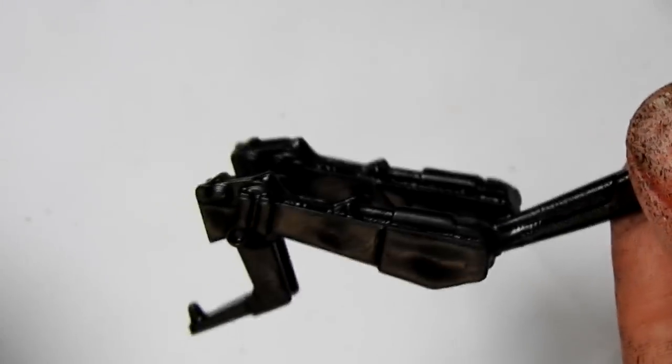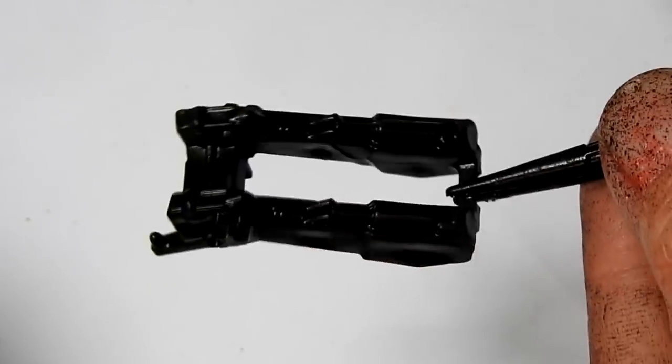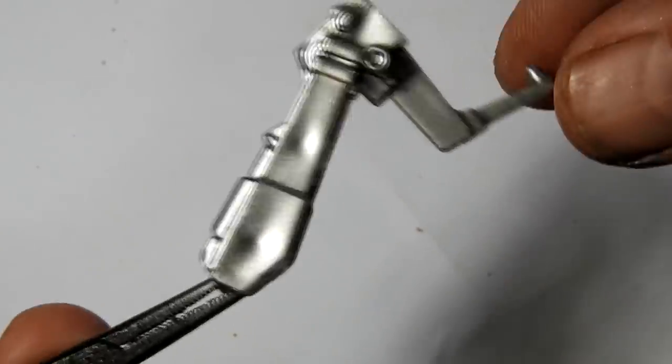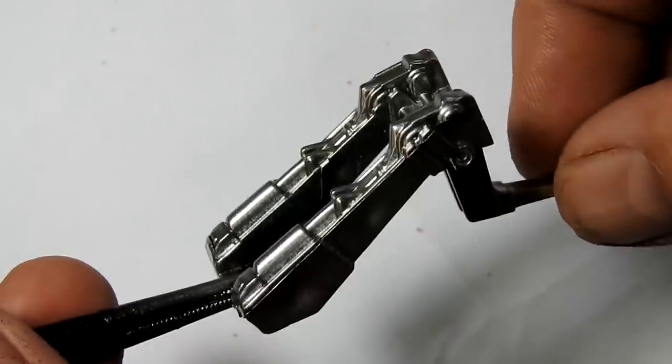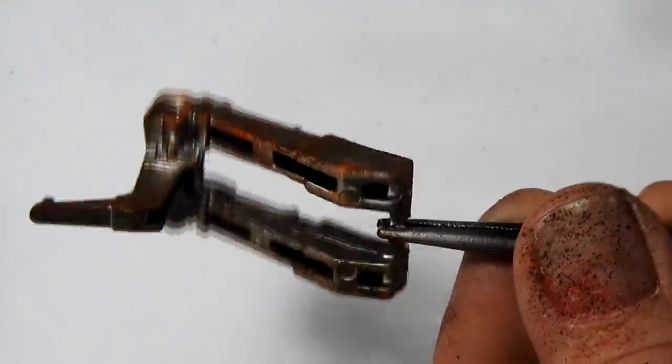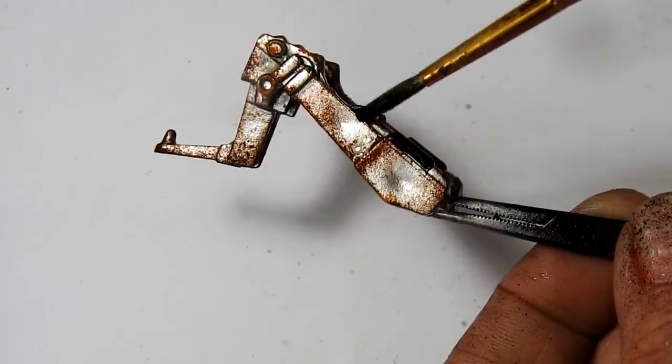That loud orange tow bar section was hit with some black primer and then again with the silver. And then rusted up and a light black wash applied.